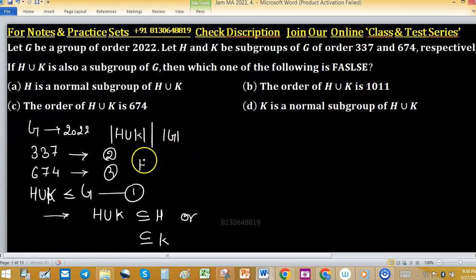H union K, because union is always larger subset, that's why order of H union K will become 674 because of larger one. This one is dividing order of G. You can write 3 into 674 and this is perfect.